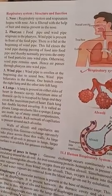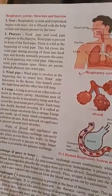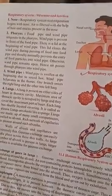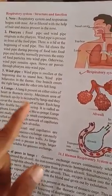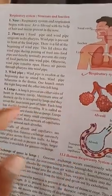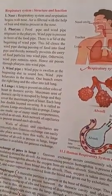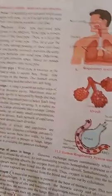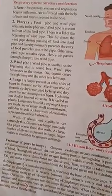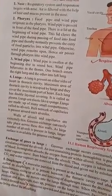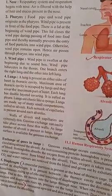Air passes through the pharynx into the windpipe. The windpipe is widened at the beginning due to the sound box — our voice is produced by the sound box, which is located there. The windpipe bifurcates in the thorax; one branch enters the right lung and the other enters the left lung. The lungs are present on either side of the heart.